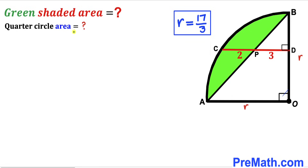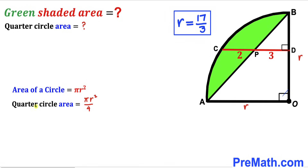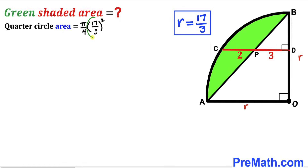Now we calculate the area of the quarter circle. Recalling the area of a circle formula: Area = πr², the quarter circle area is πr²/4. Substituting r = 17/3, we get π/4 × (17/3)² = π/4 × 289/9 = 289π/36 square units.